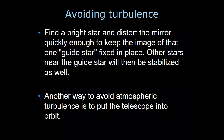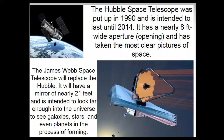The other way to avoid atmospheric turbulence is to put the telescope into orbit or into space, where there is no atmospheric turbulence. The Hubble Space Telescope was launched in 1990 and was intended to last until 2014, but it is still running well. It has a nearly eight-foot-wide aperture and has taken the clearest pictures of space. The James Webb Space Telescope will replace Hubble — it will have a mirror of nearly 21 feet and is intended to look far enough into the universe to see galaxies, stars, and even planets in the process of forming.